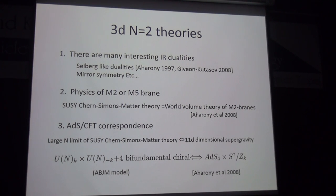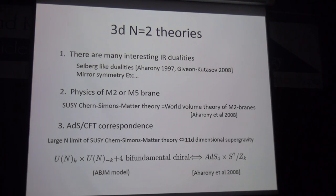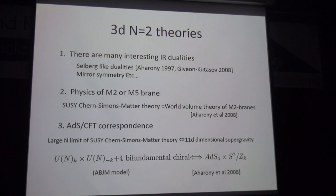In three dimensions, there are many non-trivial IR dualities, similar to Seiberg duality in four dimensions. But even with gauge group U(1) in three dimensions, a theory flows to a non-trivial IR fixed point, which is quite different from four dimensions. If we include a Chern-Simons term, we can construct a wider class of Seiberg-like dualities.